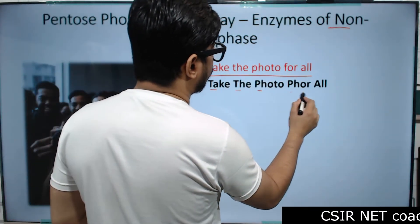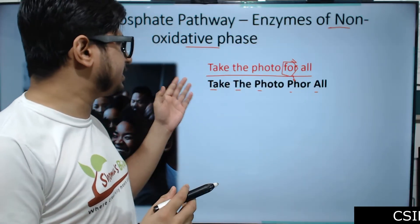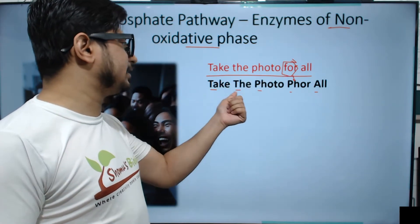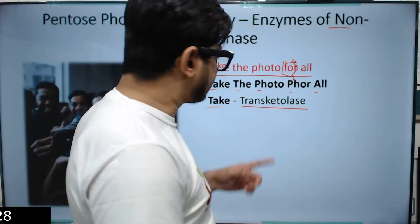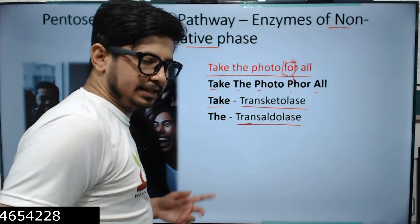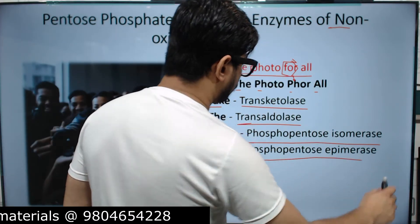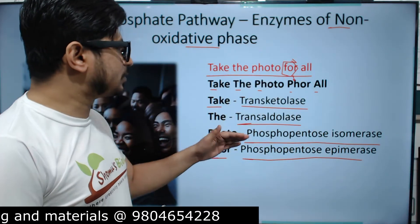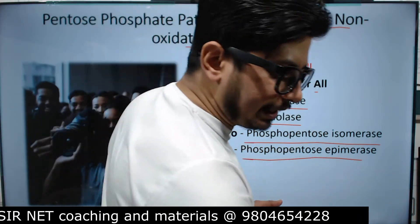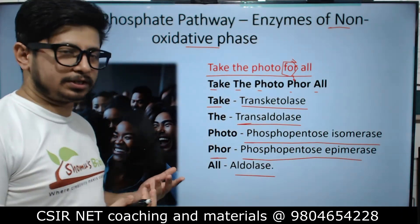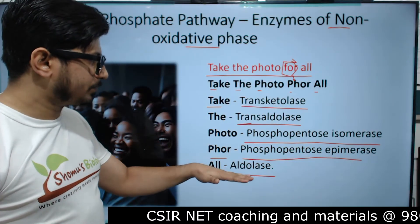Rearranging the mnemonic: 'Take the photo for all' — but 'for' is modified to 'phor.' The starting capital letters are T, T, P, P, A. The first T is transketolase, the second T is transaldolase, the first P is phosphopentose isomerase, the second P is phosphopentose epimerase — that's the difference between the two P's — and the last A is aldolase. That's how the non-oxidative phase enzymes are remembered.